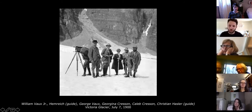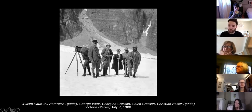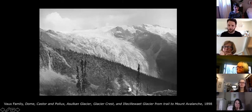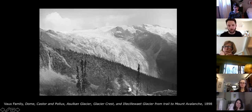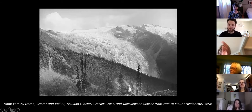They hired Swiss and Austrian guides to help blaze trails and establish routes in the mountains. In terms of repeat photography, this aspect is critical — if you go hiking in the Rockies in Banff National Park, or as we see here in Rogers Pass in what's now Glacier National Park in British Columbia, the trails you hike today are the same trails cut and established by the Vox family and their guides. They would return to the same vantage points year after year to track the recession of the glaciers.